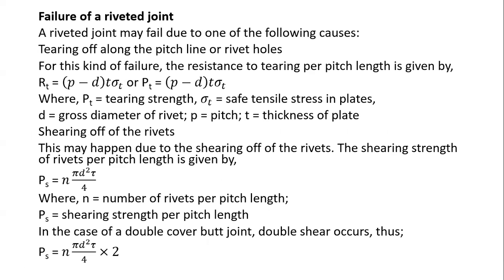What may cause a rivet or a riveted joint to fail? First, there is tearing off — failure that may happen along the pitch line of the rivet holes. The tearing force can be calculated by multiplying the tearing stress by the corresponding area. The formula uses pitch minus the diameter of the rivet, so it is (p − d) multiplied by the thickness, then multiplied by the tearing stress.